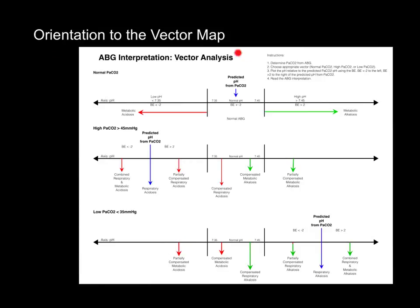This is our basic blood gas vector analysis map, and the instructions are written right here. You can download this from my website — I've got some links within the videos. The basic orientation is that we have three basic vectors to look at. All the axes are the same: we've got alkalosis on this side with high pH, and low pH on the other side. We always start from the center. Our normal CO2 level should give us a normal pH and a normal base excess of plus or minus 2. So we have our normal CO2, our high CO2, and our low CO2 vectors.